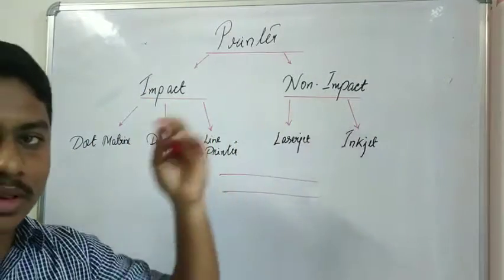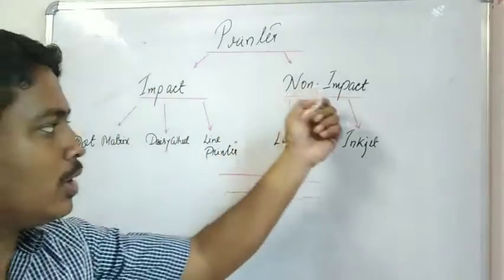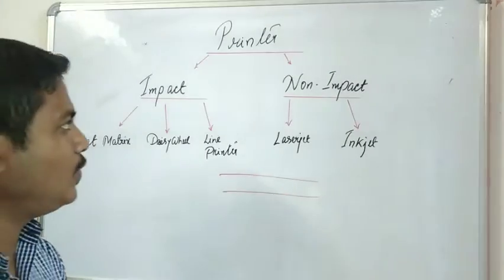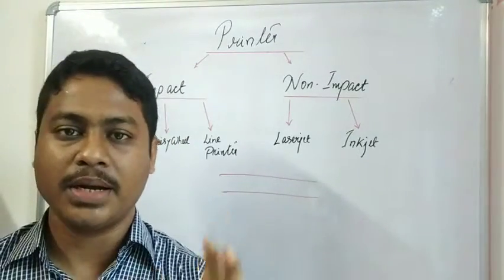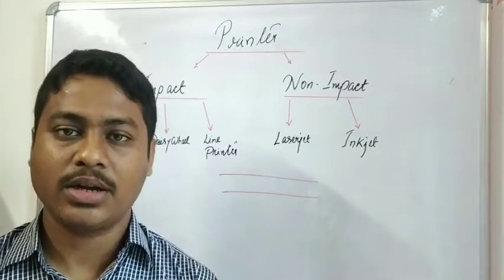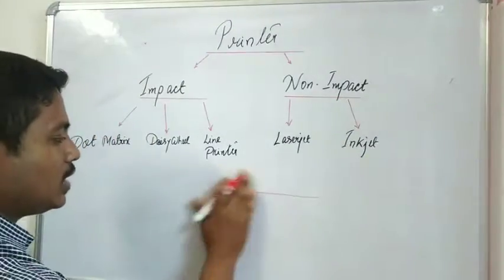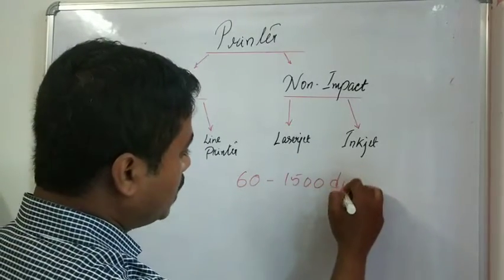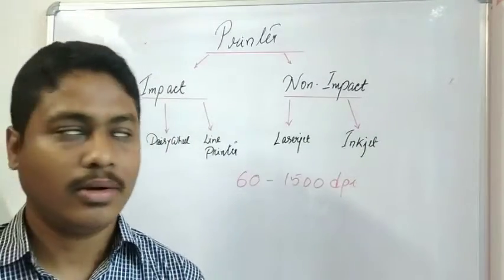Impact printers are less expensive, while non-impact printers are more expensive. In terms of speed, impact printers are slower and non-impact printers are very fast. The quality of printers depends on DPI — dots per inch — which represents the resolution. A printer can range from 60 to 1500 DPI; the higher the DPI, the higher the print quality.